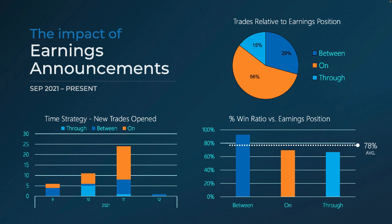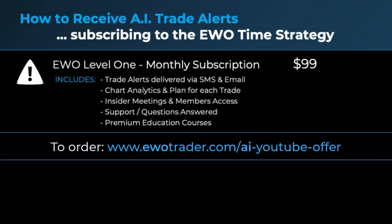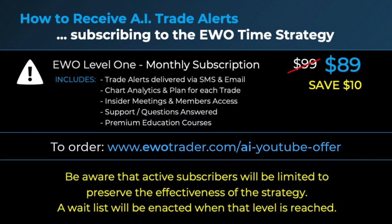I believe that gives you a pretty good summary of what the LA Wave Options time strategy is all about and how we're using AI to run it. If you'd like to receive these trade alerts, we're offering a 10% discount on the monthly subscription. We've got so much interest in this strategy that we're probably going to have to limit the number of subscribers and use a waitlist from time to time, as we don't want too many subscribers bidding up the price and making the strategy less effective. Please check the description for a link to access the discounted price.